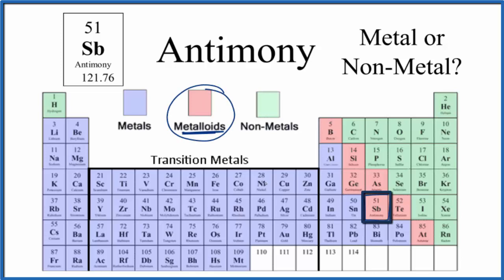Because of that, it'll have properties that are partially from the metals and partially from the nonmetals. So in answer to our question, antimony, this Sb here, is a metalloid.